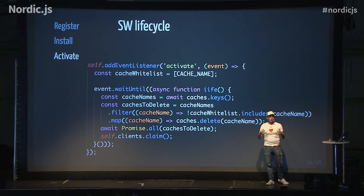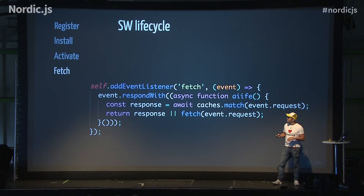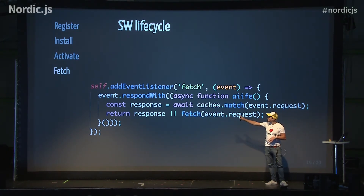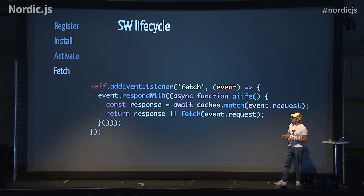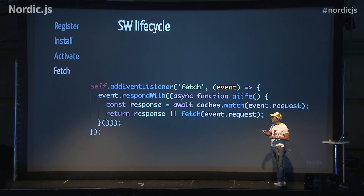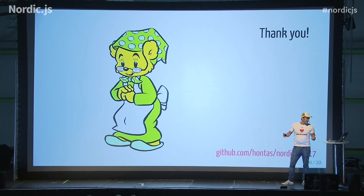If we don't want to wait for another reload from the user, we call self.clients.claim, which means we're taking control of all pages in our scope. Now the fun stuff begins — we can start intercepting network requests like fetches. This is a really simple one where we call event.respondWith, which takes a promise. We check if we have a match for this request in our caches; if we do, we return that cached response, and if we don't, we pass it on to the network.